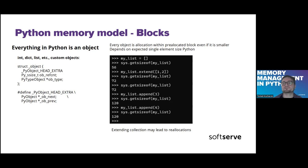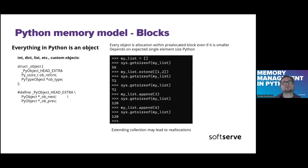Very importantly, every object contains a reference counter and also a header. This header provides room for more complex objects like lists, because it contains two pointers — for the next and previous object in the collection.